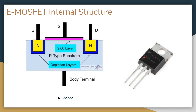On the right side you can see the outer structure of a MOSFET with three terminals outside the body: gate, source, and drain. In the internal structure of the N-channel E-MOSFET, the drain and source are N-type semiconductor materials and the body is P-type semiconductor material. A depletion region is created between the P-type body and the N-type drain and source. The gate is not directly connected with the body — there is an insulating layer of silicon dioxide between the body and the gate.